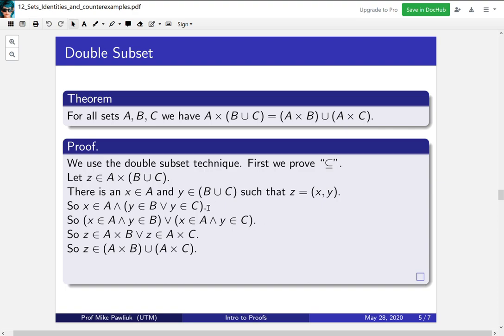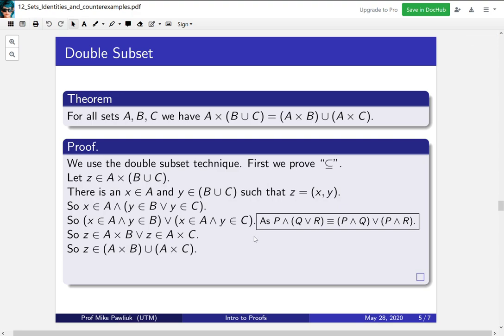And so now our question is, can I get from this line to this line? This one takes a little bit of thinking. And essentially what's going on here is that these two are the same, except this one has x in A and y in B, and x in A and y in C. So how are these two things related? Well, this is a logical identity that AND distributes over OR. So these two things are logically equivalent. You can check that using truth tables if you want. So here we're using P is the statement x ∈ A, Q is the statement y ∈ B, and R is the statement y ∈ C.